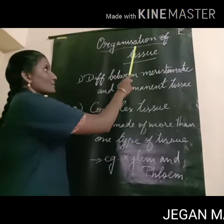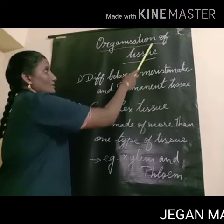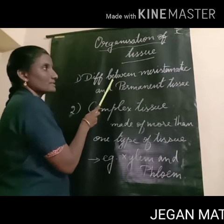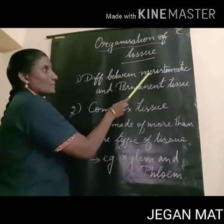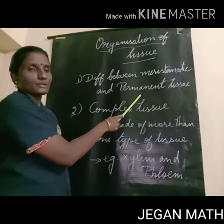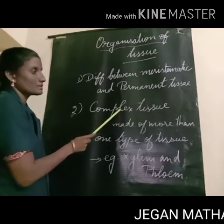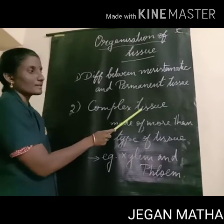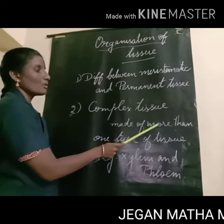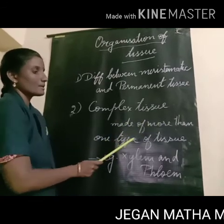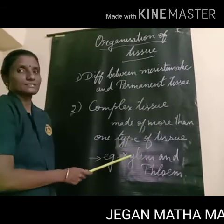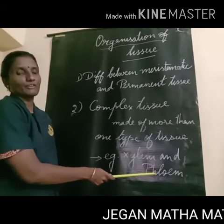Today we are going to see about organization of tissue. In that, we are going to see about the difference between meristematic tissue and permanent tissue. Next, we are going to see about complex tissue. Complex tissue is made up of more than one type of tissues. In this, we are going to study xylem and phloem as examples of complex tissue.